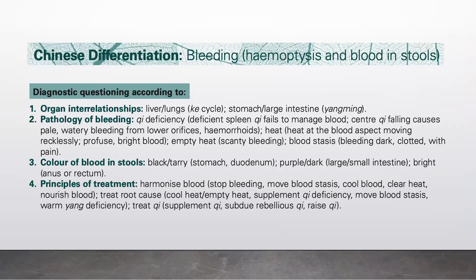Now let's proceed to Chinese differentiation. In Chinese medicine, we first look at organ interrelationships. The organs involved are the liver and lungs in the Ko cycle, and the stomach and large intestines as the Yangming organs. Next we examine the pathology of bleeding.